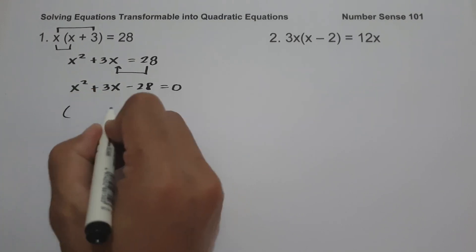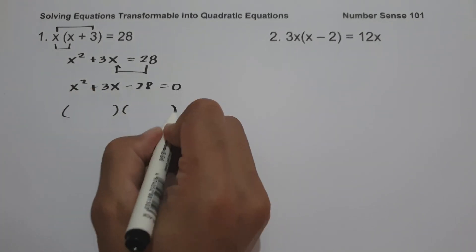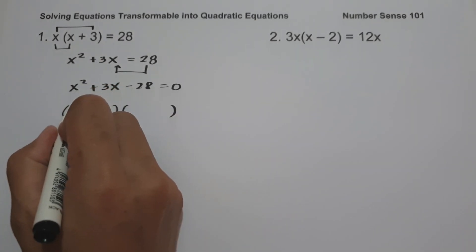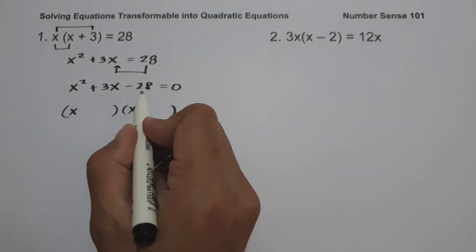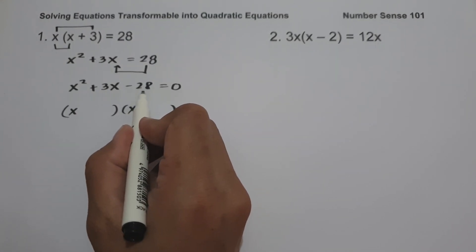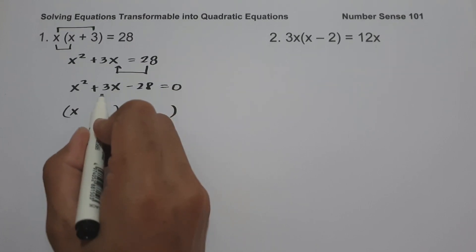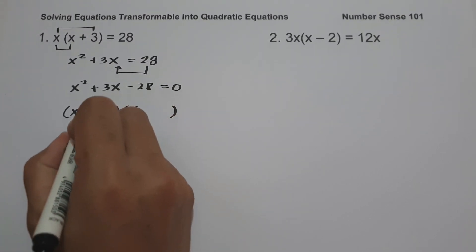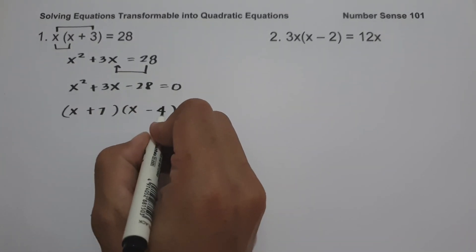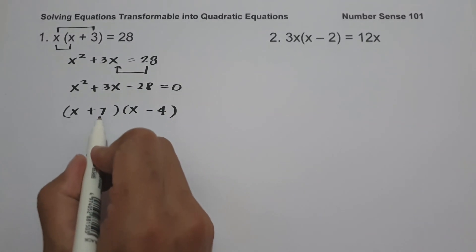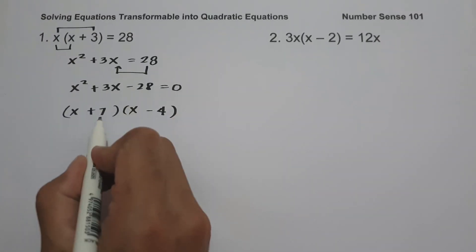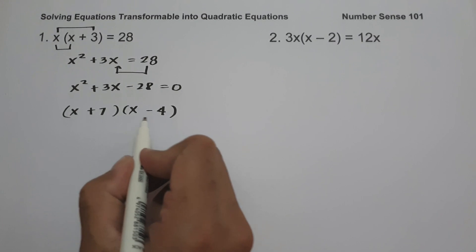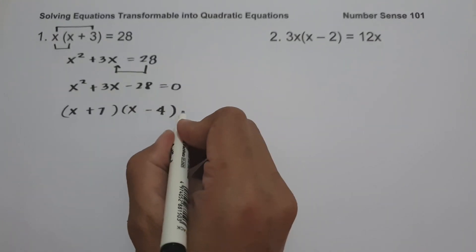Let us factor this. The factors of x squared are x and x. We need two numbers that multiply to negative 28 and add to positive 3. That is positive 7 and negative 4: 7 multiplied by negative 4 is negative 28, and 7 plus negative 4 is positive 3.